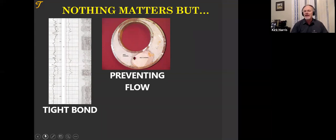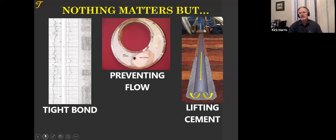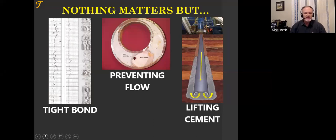The cement must be designed to help prevent gas from flowing through it. The third key thing is that I'm able to place it — there's nothing worse than pumping a cement job and it goes out and not up. So lifting cement is really important. Does the design give a bond, stop gas intrusion, and allow me to pump and lift it? What is the fourth thing?